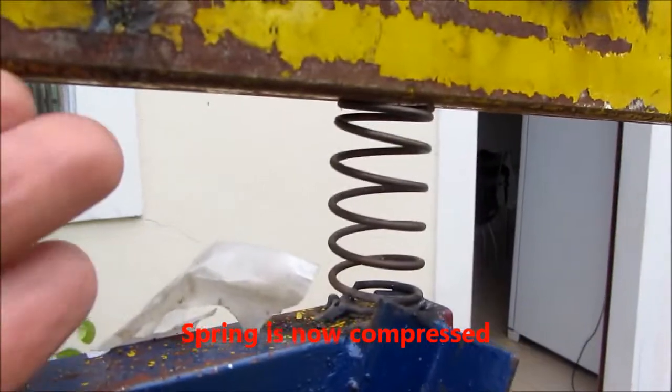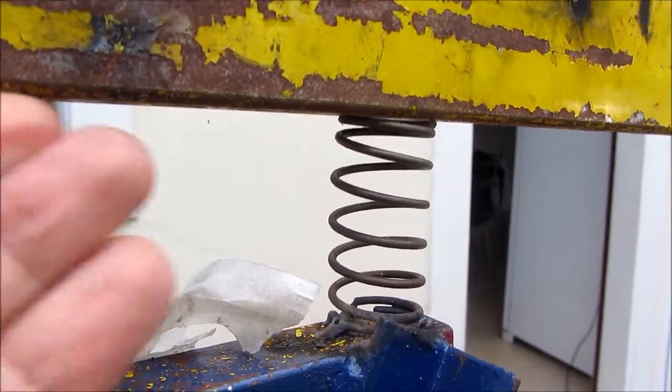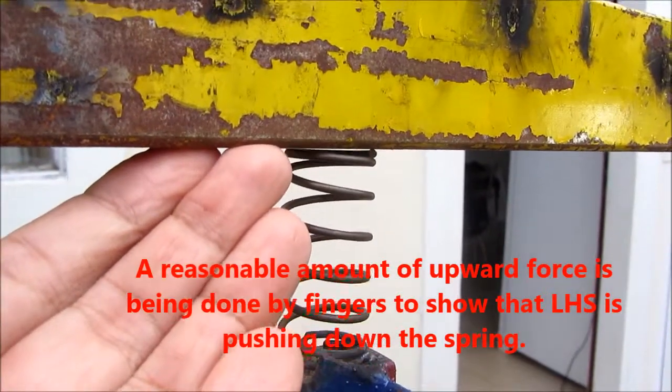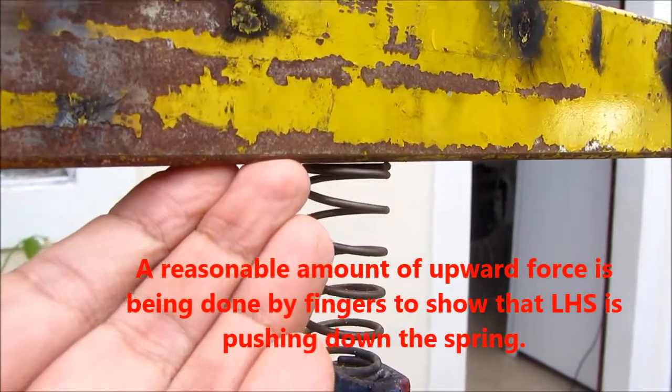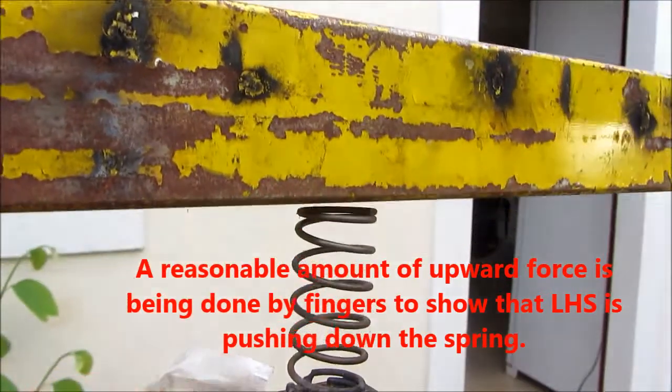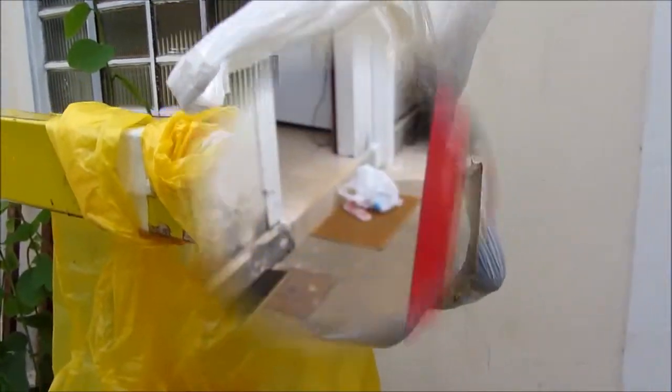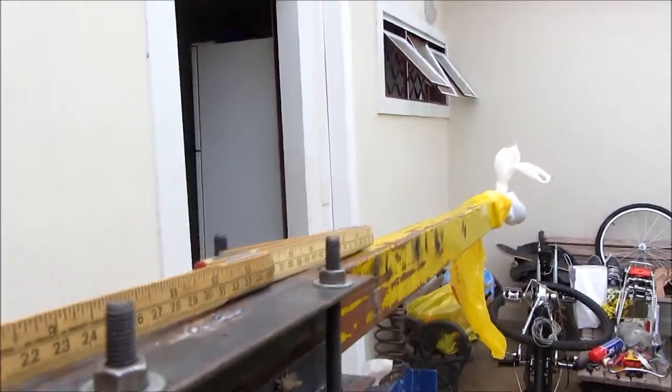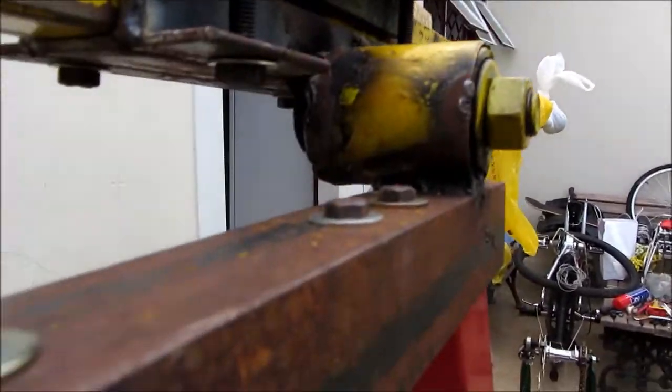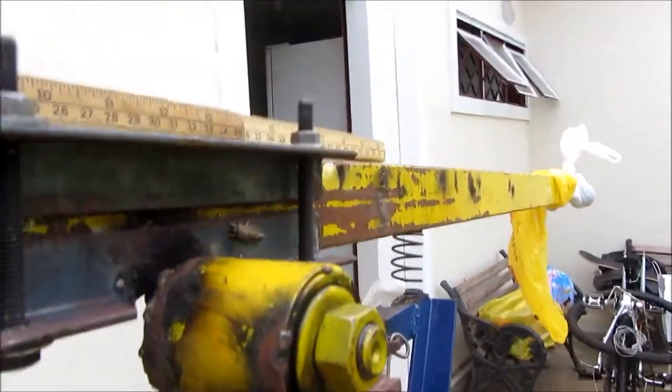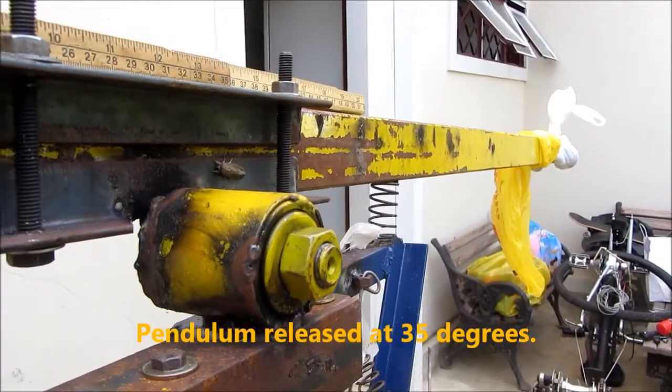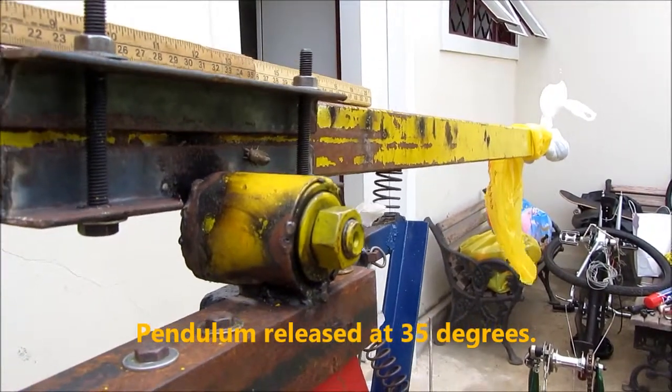Here you can see that the spring is compressed. You have to do a lot of force upwards. You can see that the spring has moved - there's a greater damping over there. So now I'm pushing the pendulum. Getting a better point of view with the camera so you can see the spring. The pendulum released at about 35 degrees.